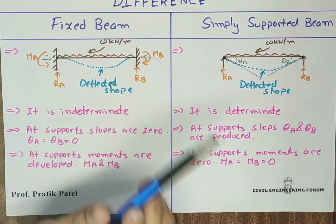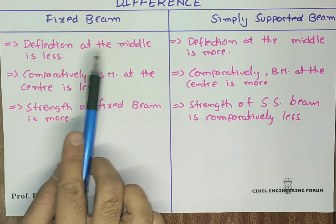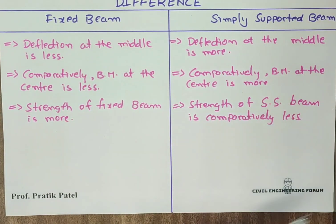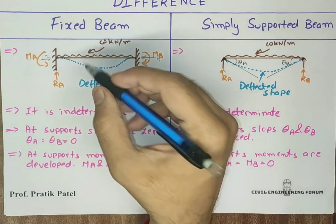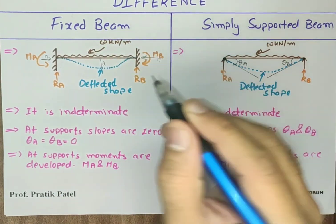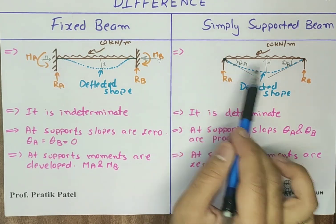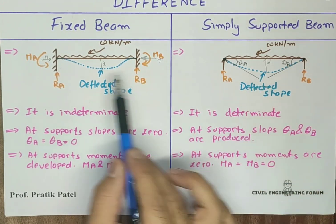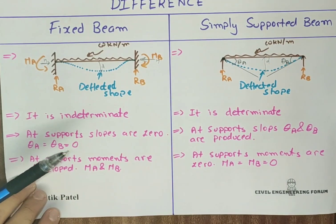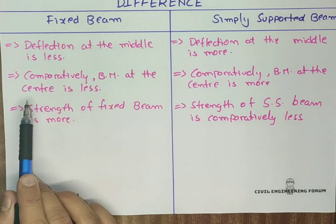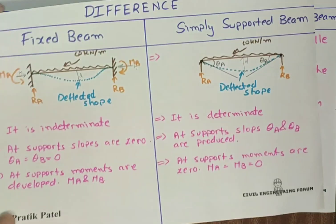Due to symmetry, MA will be equal to MB. Deflection at the middle of the fixed beam is less, while deflection at the middle of the simply supported beam is more. Comparatively, the bending moment at the center of the fixed beam is less, while the bending moment at the center of the simply supported beam is more.